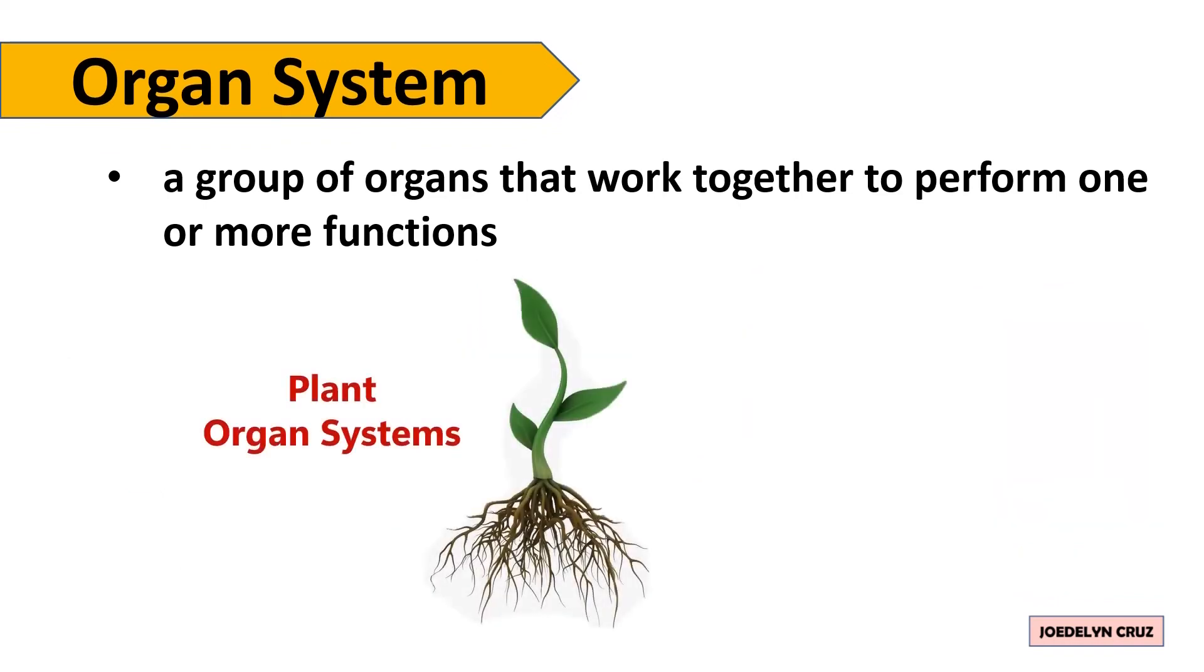Plant organ systems include the shoot system that consists of leaves and stems, and the root system that is composed of roots.